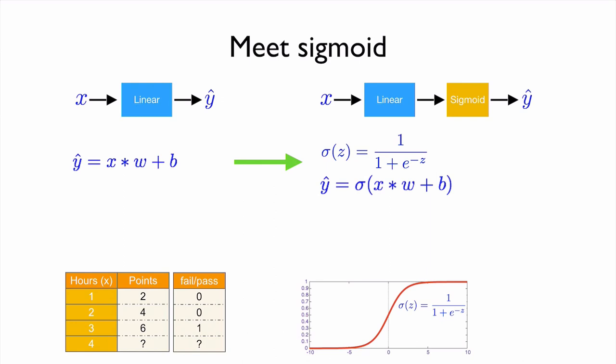In summary, we can show that the model now using a sigmoid, this is our sigmoid, and then we just basically wrap our linear model. This is our linear model, wrap with this sigmoid function, and that's it.